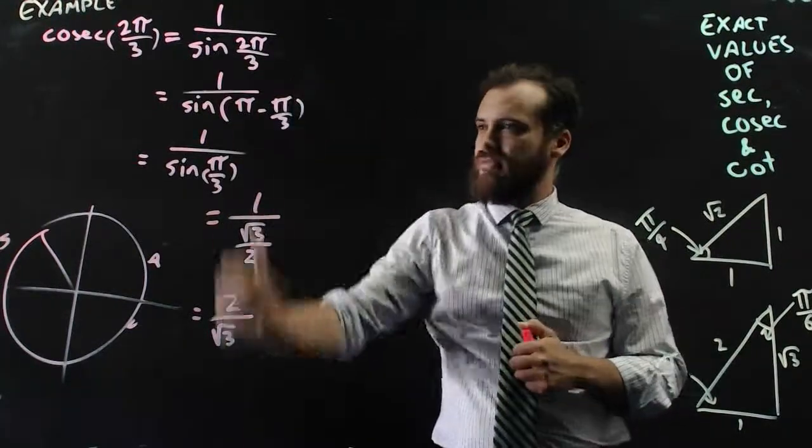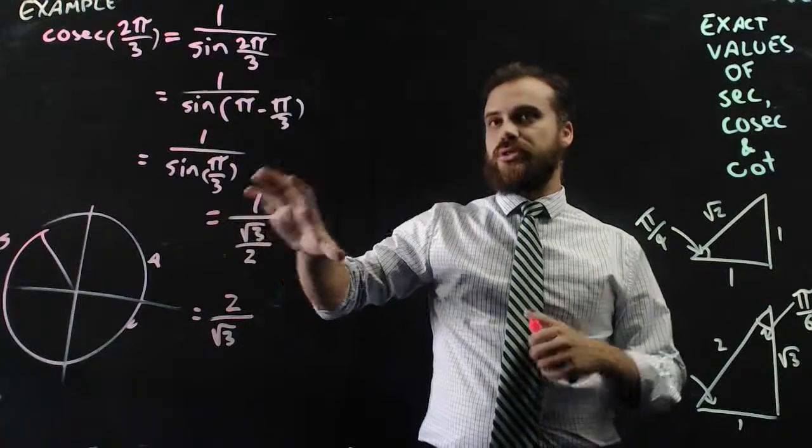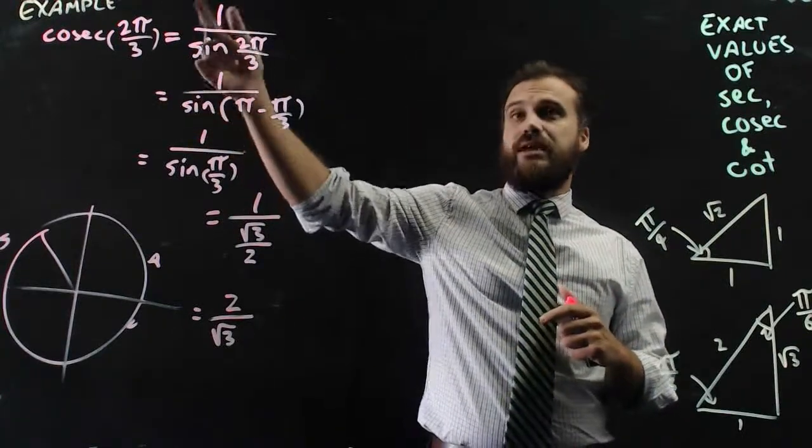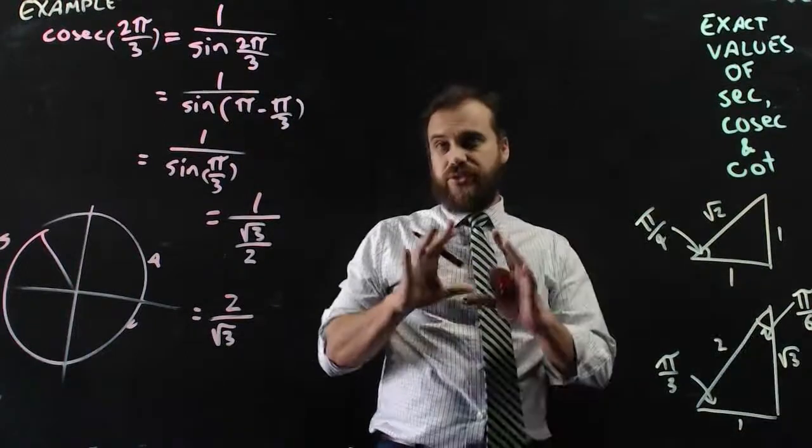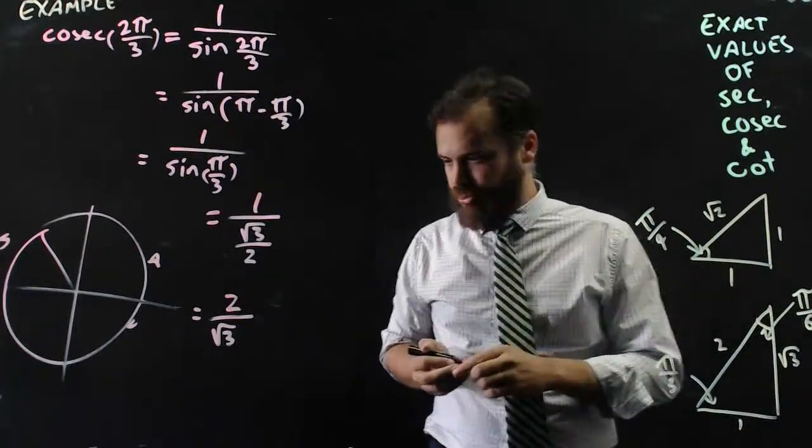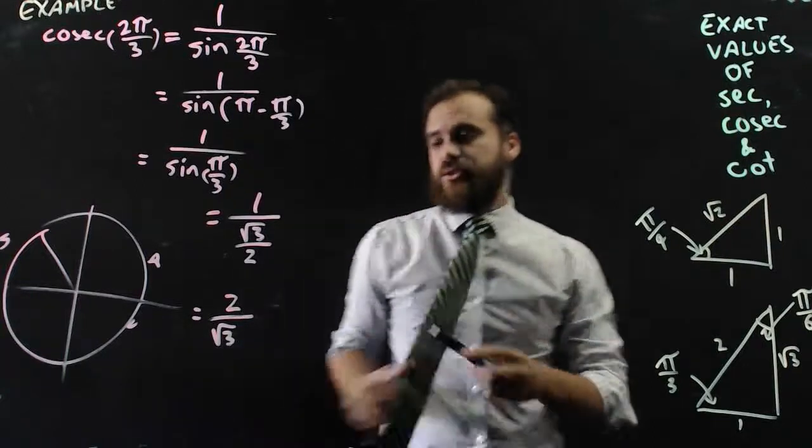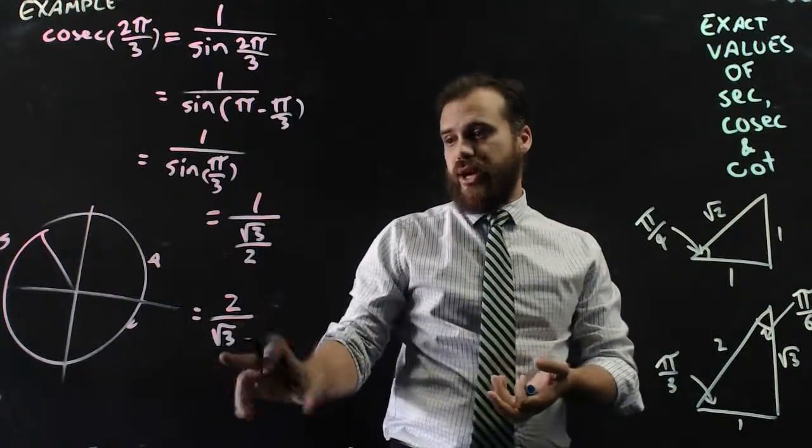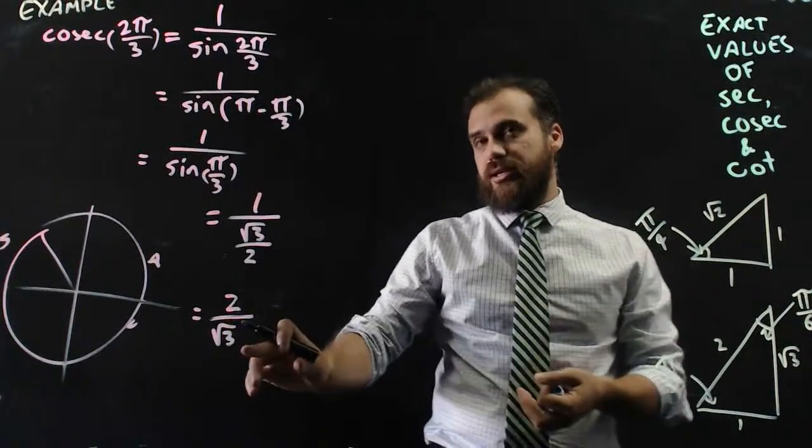So a little bit of extra work compared to what you're used to, but it's all based around the fact that cosec is the same as 1 over sine. Just for the sake of completeness here, I should probably say that your textbook might give a different answer just because they might rationalize the denominator.